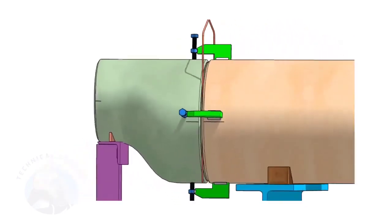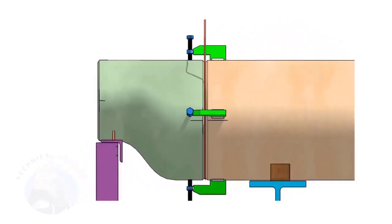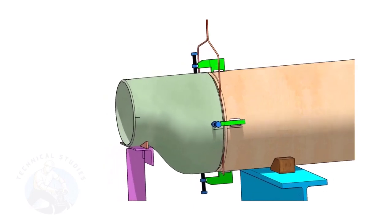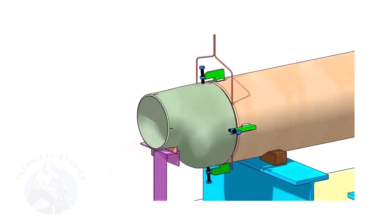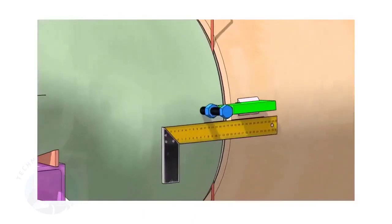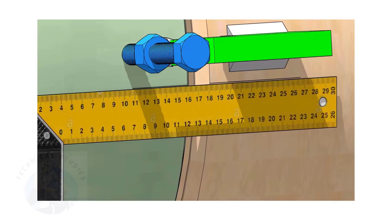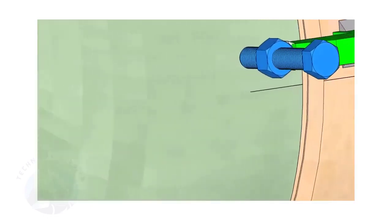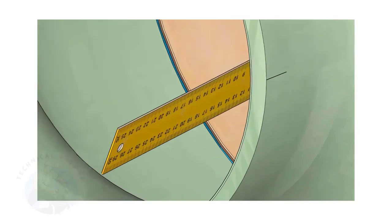Match the center lines on the pipe and on the reducer. By adjusting the jack bolts, correct the overlap of the joint inside the pipe.